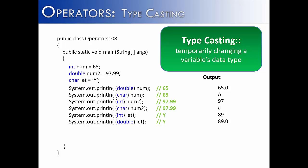We can move from one data type to another using a typecast. The three primary values I'm starting with are an integer num that is 65, a double value called num2 that is 97.99, and a character let that is capital Y. On the right here, I've shown what value we're going to start with, and then the output is going to represent what happens once it is cast.